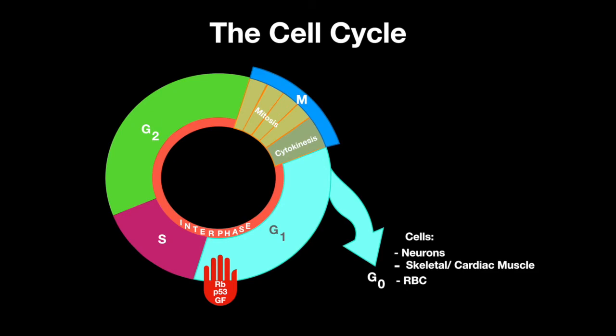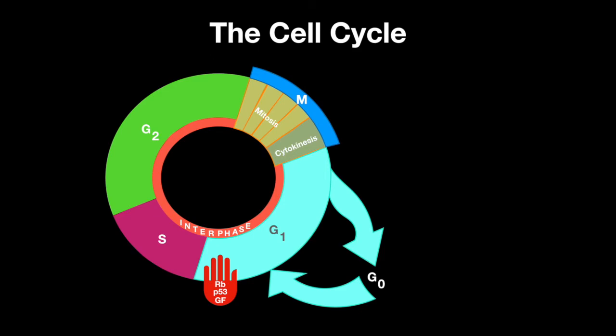Some cells may be in G0 but leave into G1 when signaled to. Hepatocytes, lymphocytes, PCT, and periosteal cells may enter G1 from G0. These cells are referred to as quiescent.